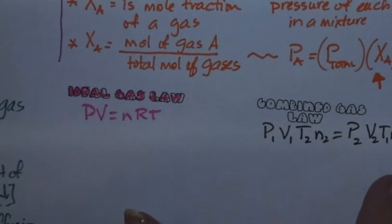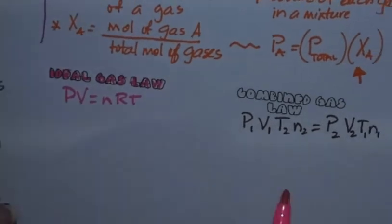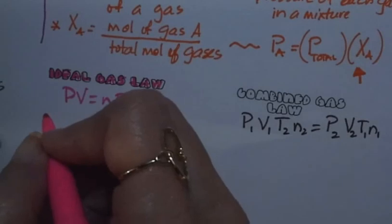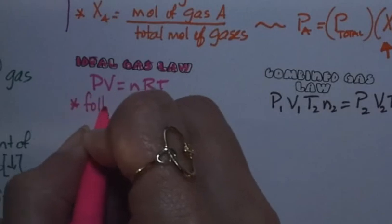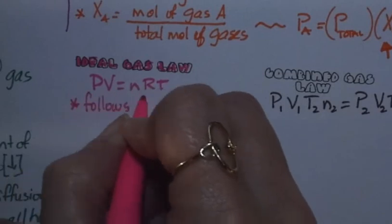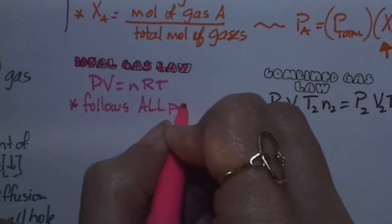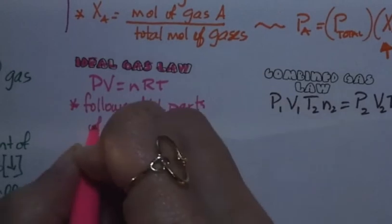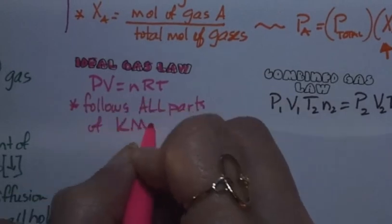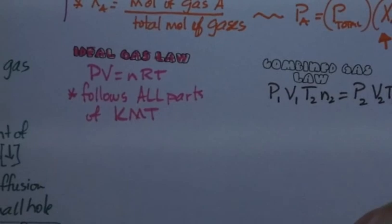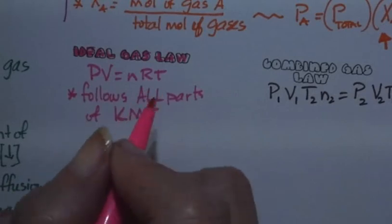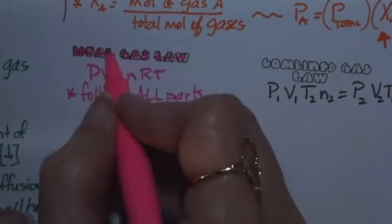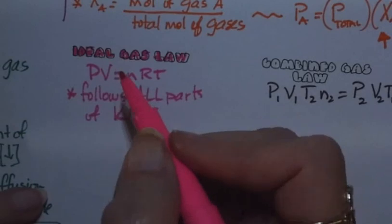The ideal gas law follows all five parts of the kinetic molecular theory, abbreviated KMT — we'll take notes on that shortly. It's called the ideal gas law, but in reality, is anything truly ideal? There are no true ideal gases.